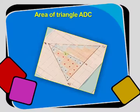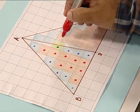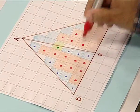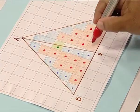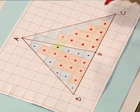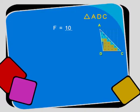Similarly, we will find the area of triangle ADC. We first count the fully filled squares and represent them by a dot — 1, 2, 3, 4, 5, 6, 7, 8, 9, 10. So the number of fully filled squares is 10.